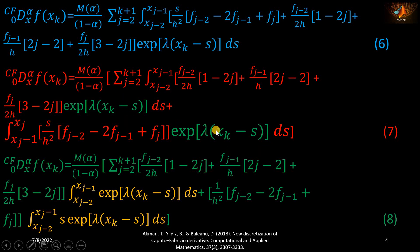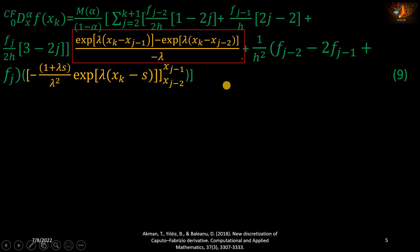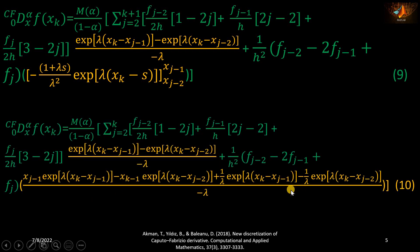In equation number seven, the exponential terms have the variable s, and there is also another s variable present. We separate these terms in equation number eight, highlighted in yellow, so we can clearly see which terms are going to be integrated. The first term involving the exponential function has been integrated using the fundamental theorem of calculus by substituting the upper and lower limits, and the second term is also integrated, giving equation number ten.